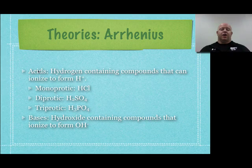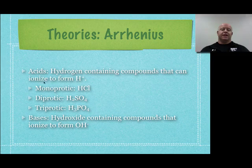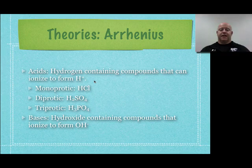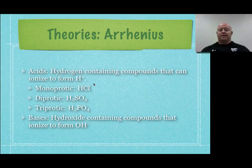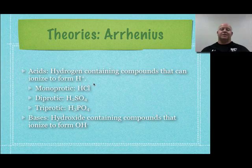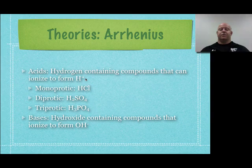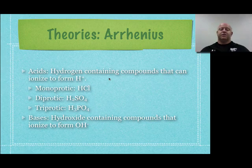In his theory, all acids had to contain hydrogen — they're hydrogen-containing compounds that can ionize to form H+. So you had to have hydrogen and it had to be able to ionize. Which is fine, because all acids do this. The problem is we have acids that exist that don't fit this — things that are acidic and may not contain hydrogen that ionizes. So the definition is a little too narrow for what we use today.